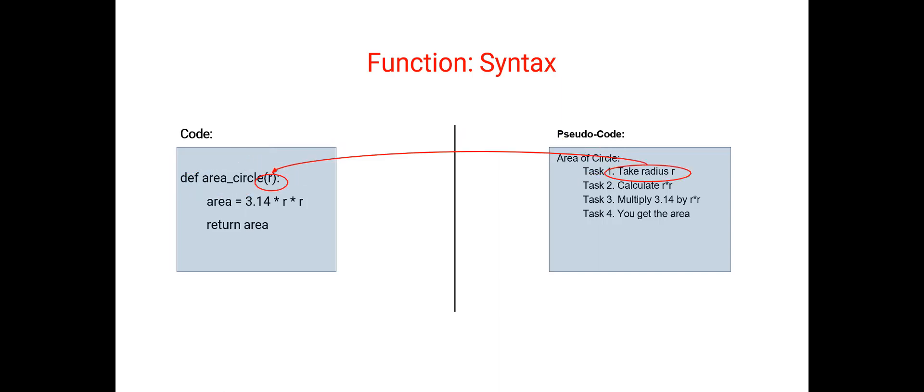The next thing is whatever input your pseudocode or your task is expecting, in this case, for example, it's expecting a radius r. That input will be passed in as a variable to this function. So these circular parentheses are very important while defining a function. So you write the def keyword, then space, then function name, and then you give the circular parentheses.